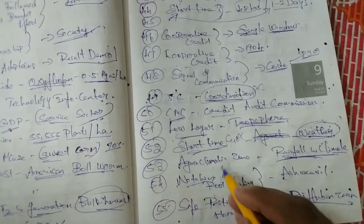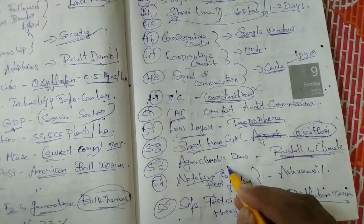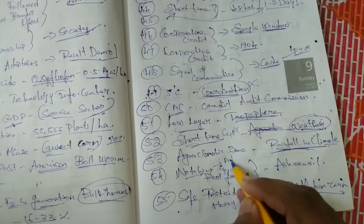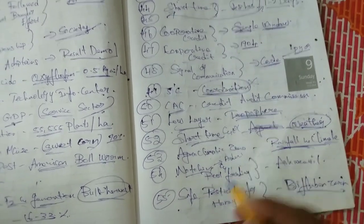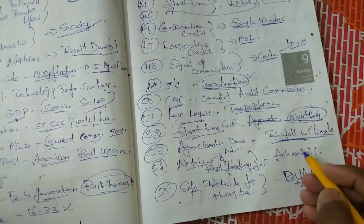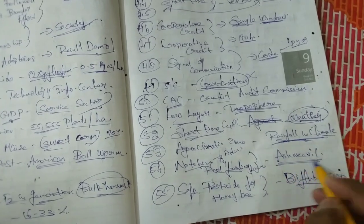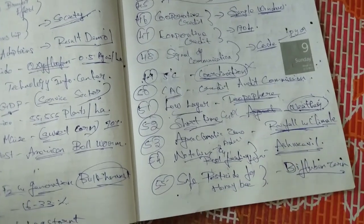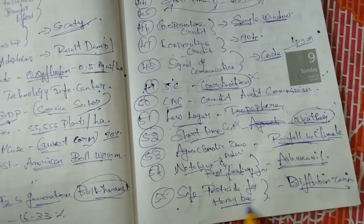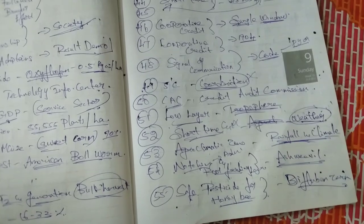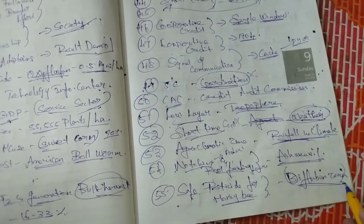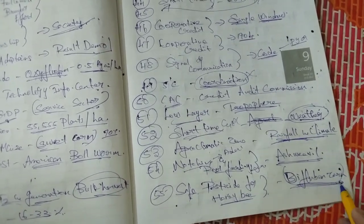That's the gnarcing symptom. Root feed larvae. That's the ashville. That's the safe pesticide for Harribee — that's the safe pesticide. Bifluorozone.